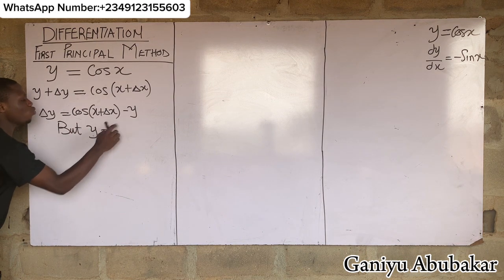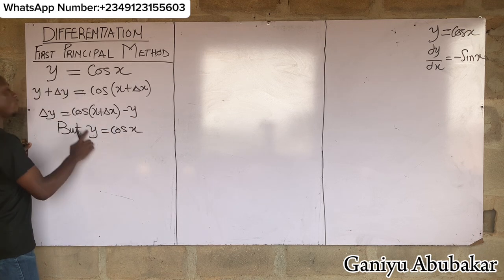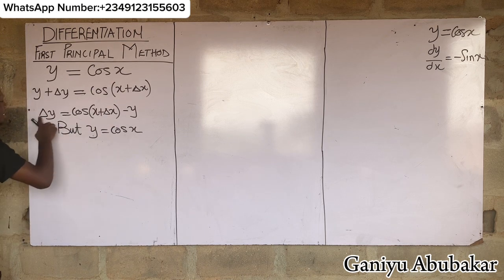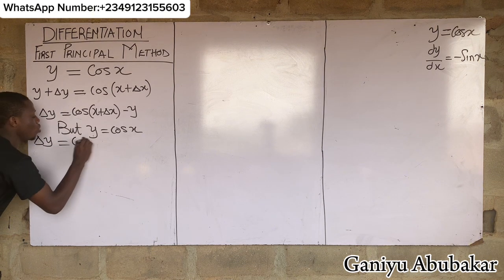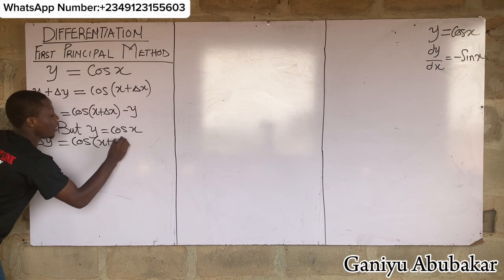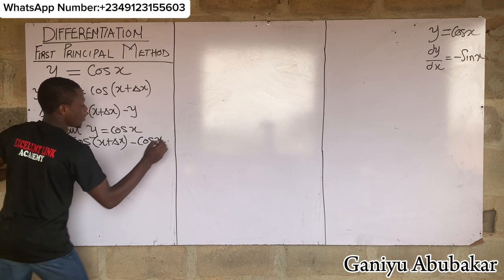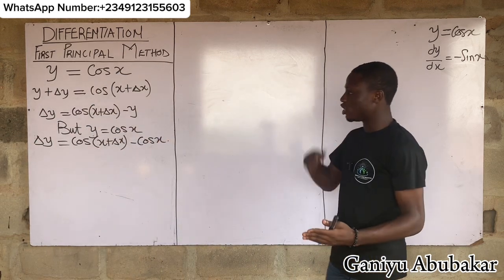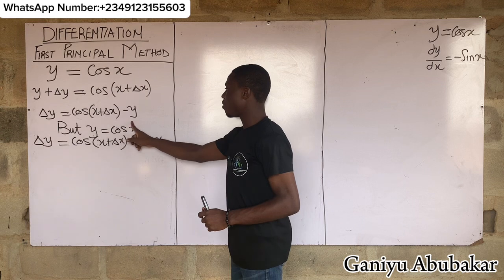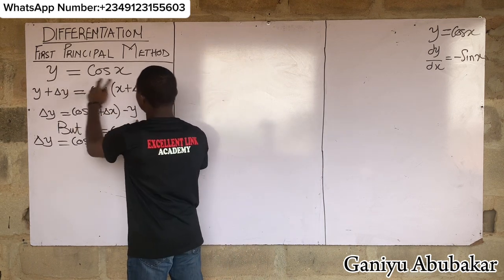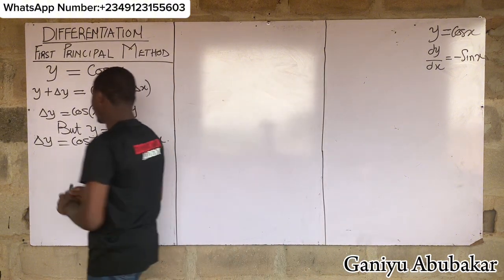Now, y represents something from the question — y is cos x. So wherever I see y, I put cos x. Therefore, Δy equals cos(x + Δx) minus cos x. Now I'll recall a popular trig identity.